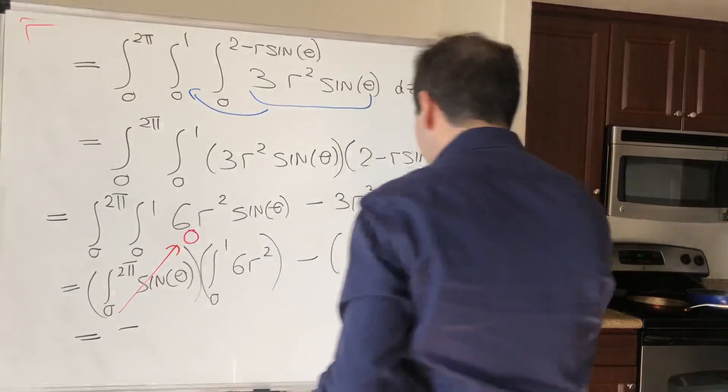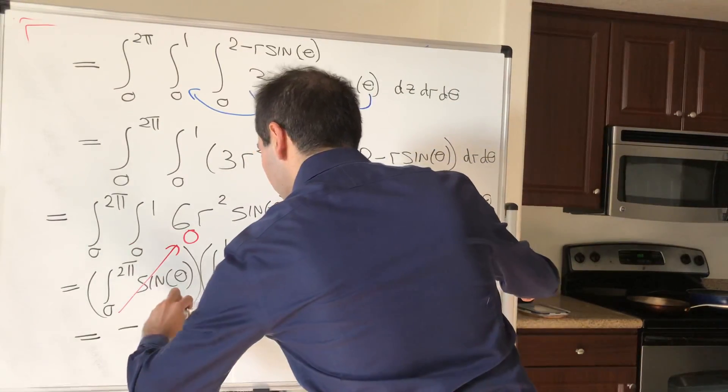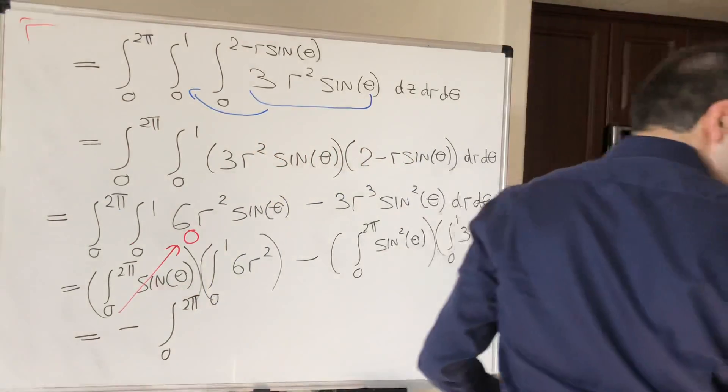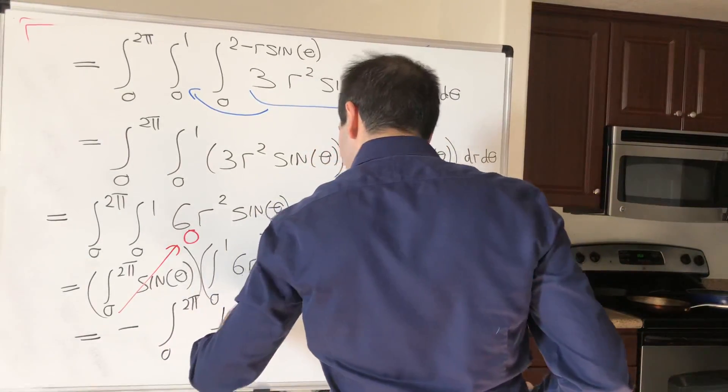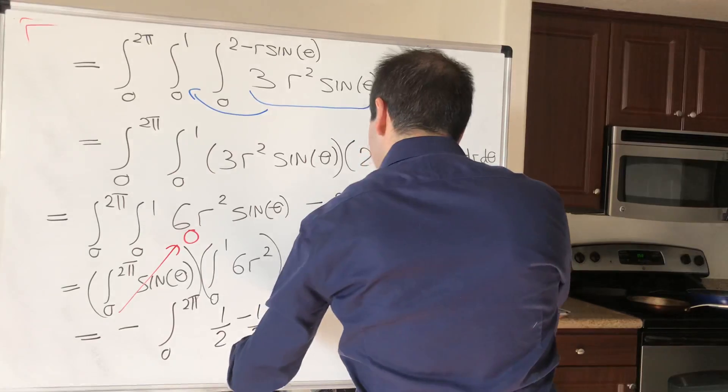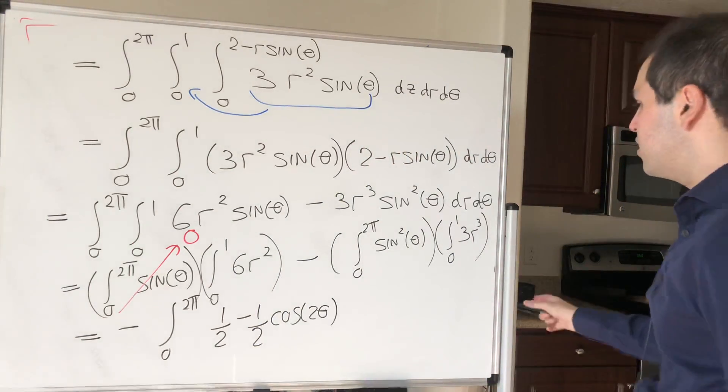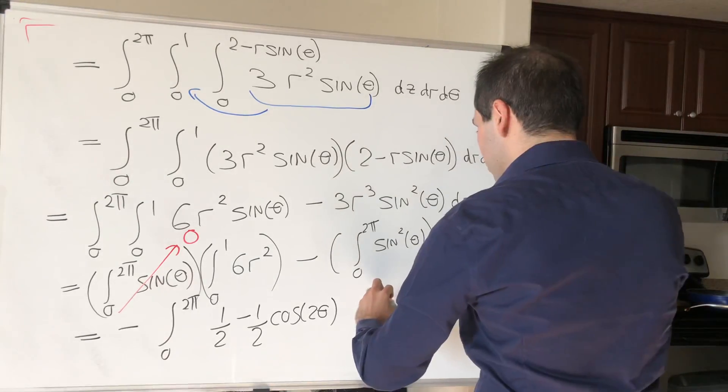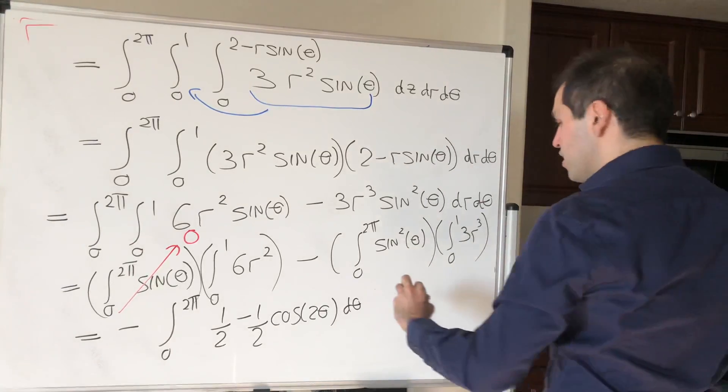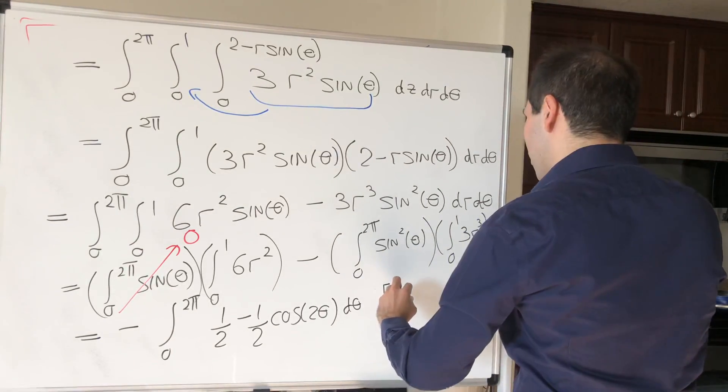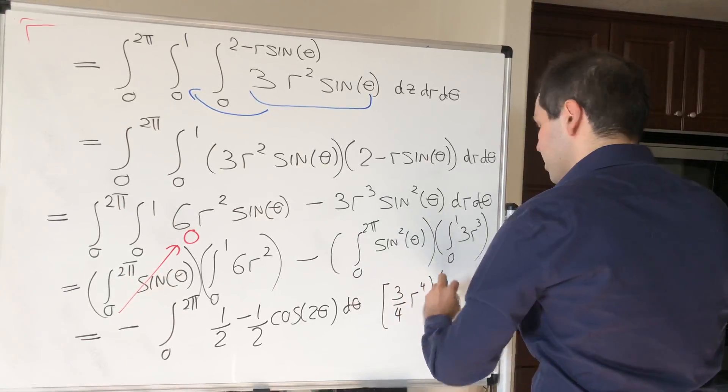So minus, now remember the double angle formula for sine squared, so sine squared is I believe 1 minus, 1 half, sorry, 1 half minus 1 half cosine of 2 theta. And then an antiderivative of 3r cubed is just, let's write out d theta, antiderivative of 3r cubed is 3 fourths, r to the fourth, again that's from 0 to 1.